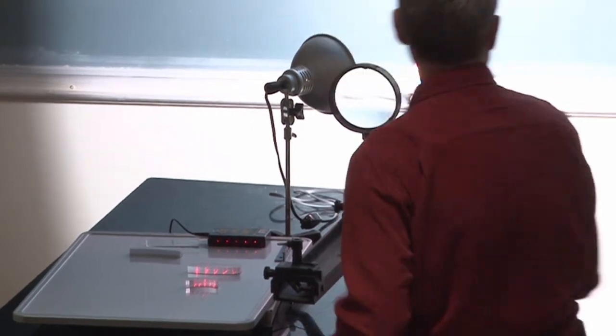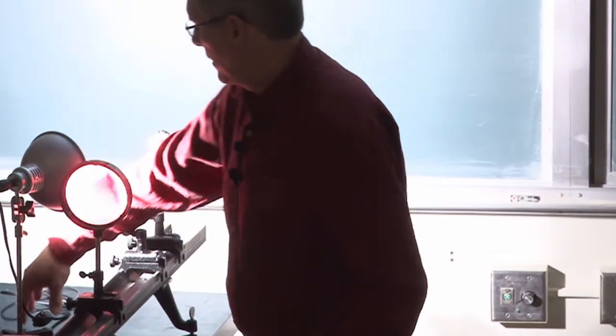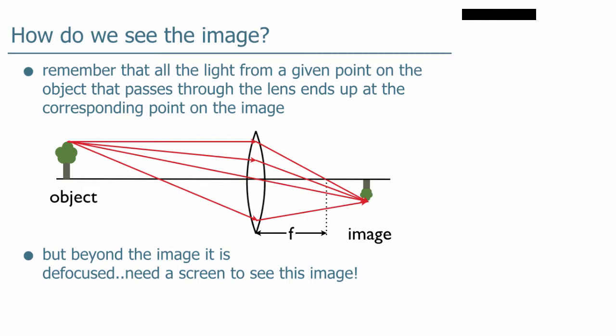Now we have to figure this out, right, mathematically. Where the image ends up depends on the focal length, the distance of the object from the image, from the lens.